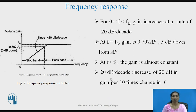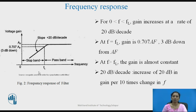20 dB per decade means there is an increase in gain of 20 dB per 10-times change in frequency. For example, on a log scale over the range 1 to 10 or 10 to 100, you get a 20 dB increase in gain over that range.